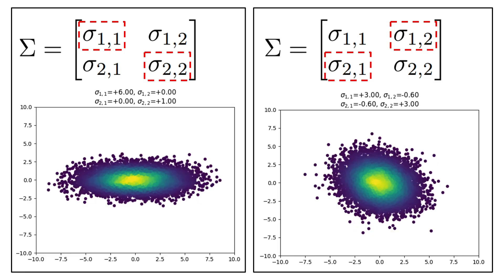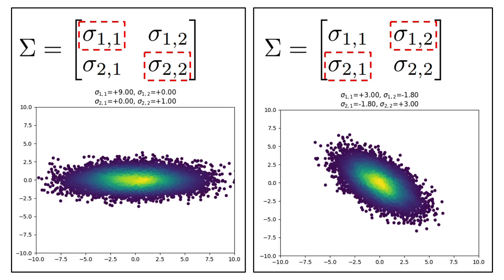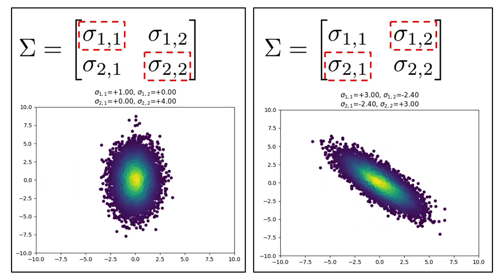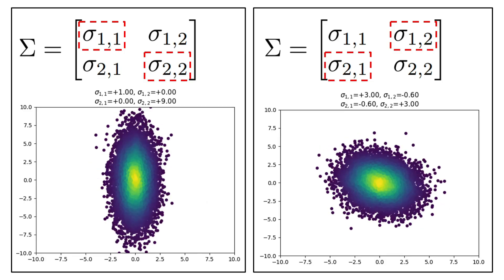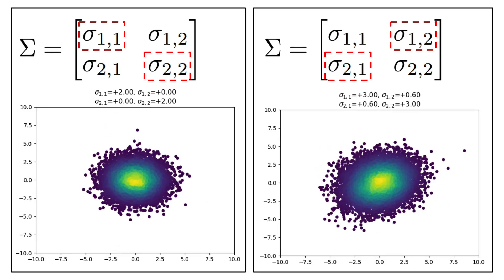On the other hand, the off-diagonal elements of the covariance matrix, sigma12 and sigma21, represent the covariances between different variables.